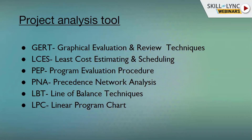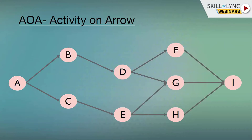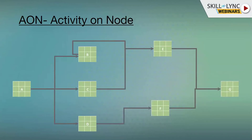There are two types of processes I'll be discussing. First is Activity on Arrow — circles represent events and arrows represent activities. Second is Activity on Node — boxes represent activities whereas arrows represent the relationships between various activities.